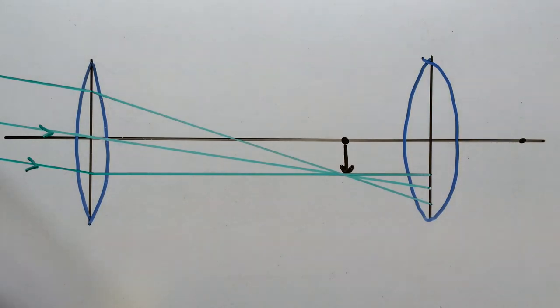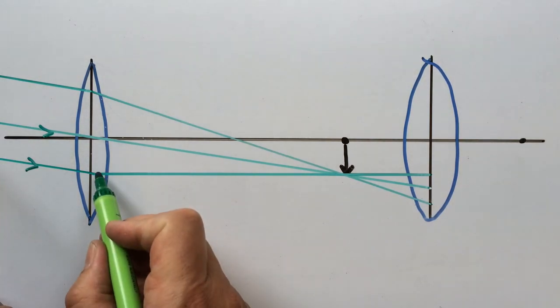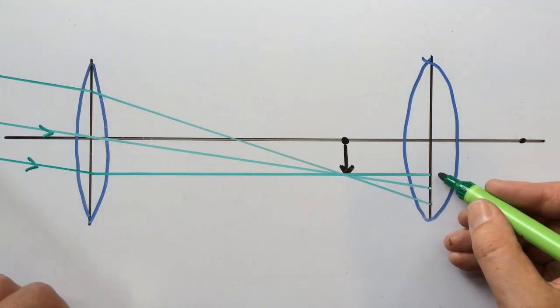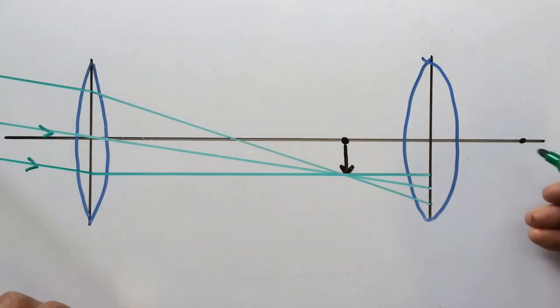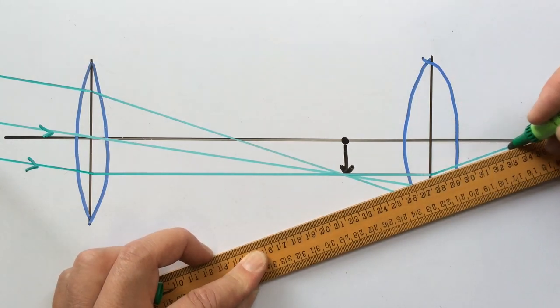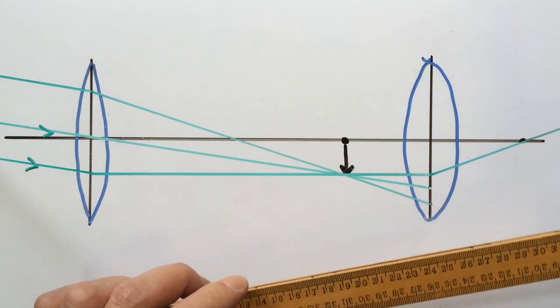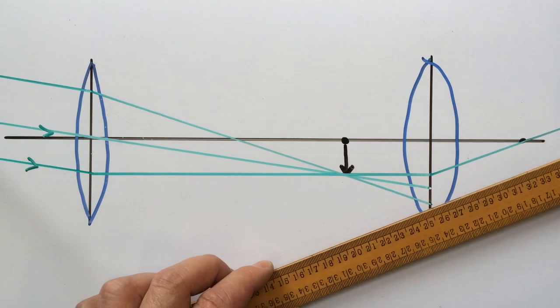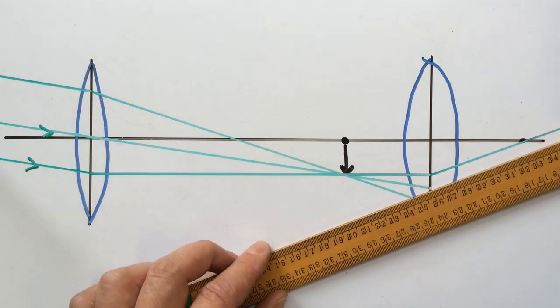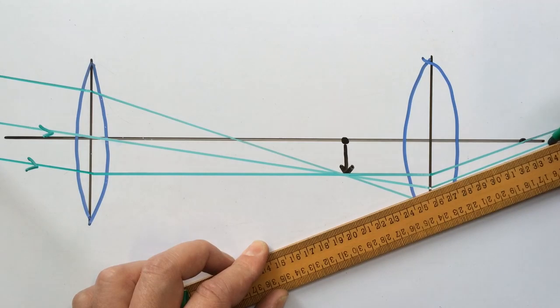Now in order to complete the diagram I can use the fact that this ray traveling parallel to the principal axis when it emerges from the eyepiece is going to pass through the focus. So I can complete its path like that and then we know that when the telescope is in normal adjustment, the rays that emerge from the eyepiece will all travel parallel to each other giving an image at infinity.